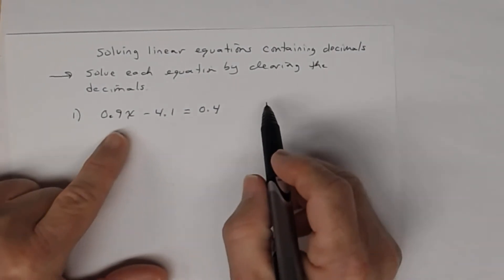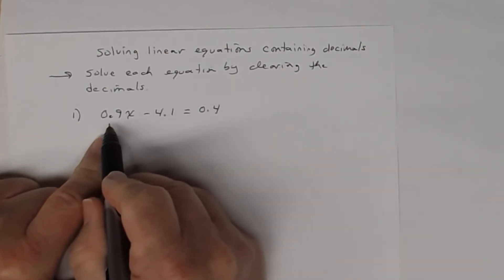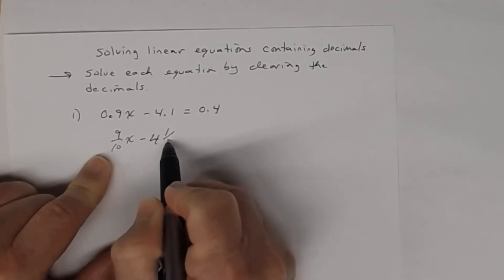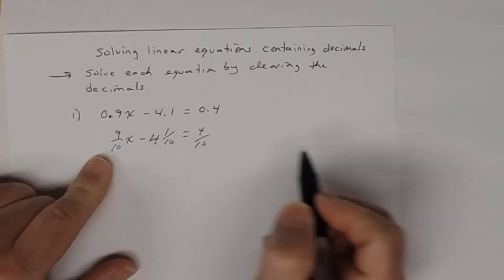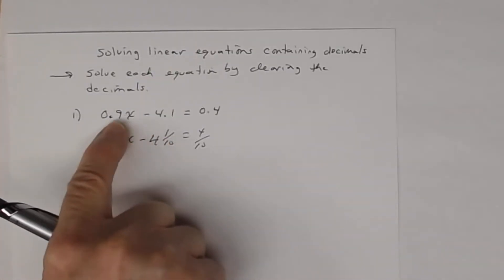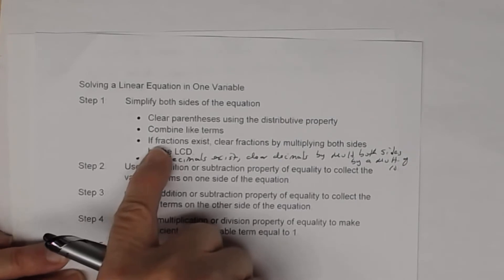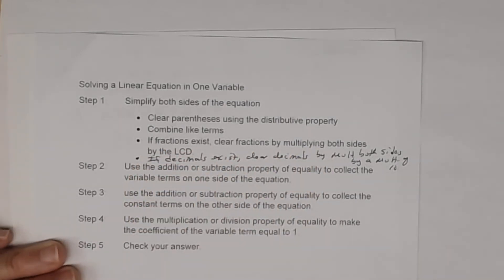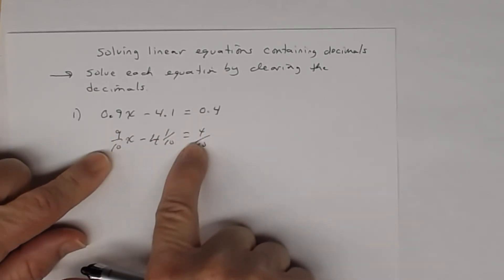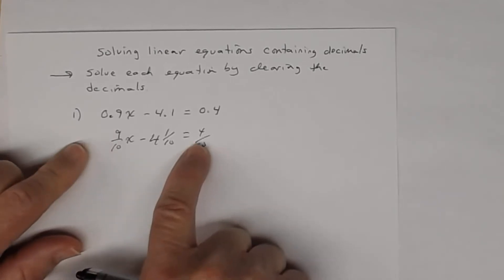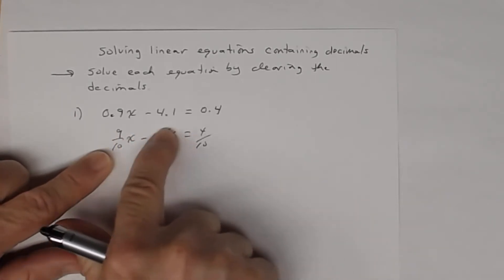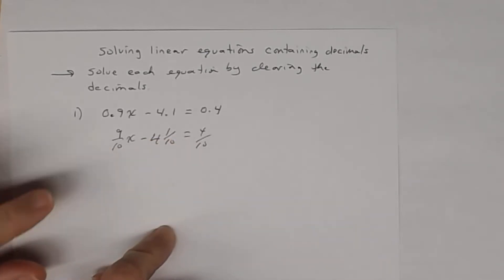We can rewrite 0.9x − 4.1 = 0.4 as 9/10 x minus 4 and 1/10 equals 4/10. Notice these all have denominator 10, so the LCD is 10. You can either multiply the decimal equation by 10 or convert to fractions first — though if using fractions, you'll need to rewrite the mixed number as an improper fraction. We'll do it both ways.